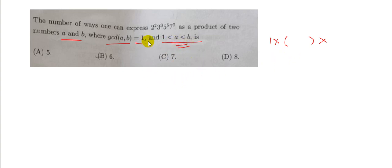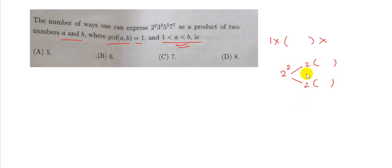We cannot split any of the prime powers — for example, if we split 2² into 2 and 2 and combine one with the rest, the GCD of the two resulting numbers would be 2. So we cannot split any of the given prime powers; we must take each prime power in its totality.